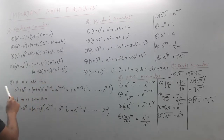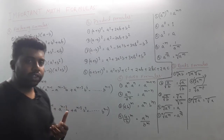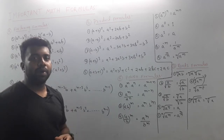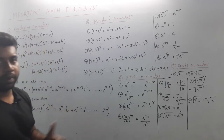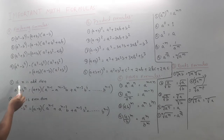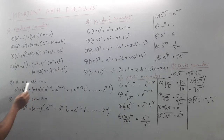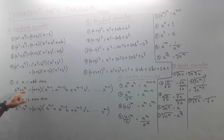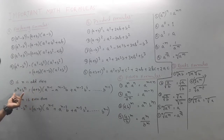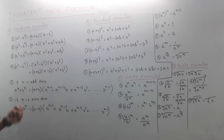Now look at the standard formula. If n is an odd number, then a to the power n plus b to the power n has a formula. So let's look at the generalized formula for when n is odd.